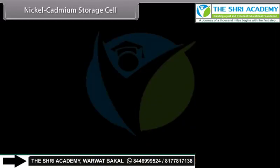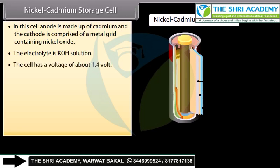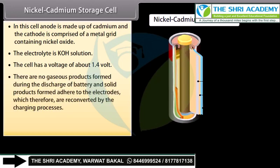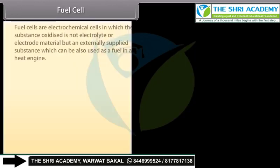In the nickel cadmium storage cell, the anode is made of cadmium and the cathode is comprised of a metal grid containing nickel oxide. The electrolyte is KOH solution. The cell has a voltage of about 1.4 volts. There are no gaseous products formed during discharge, and solid products formed adhere to the electrodes, which are reconverted by the charging process. These cells are extensively used in electronic watches and calculators.